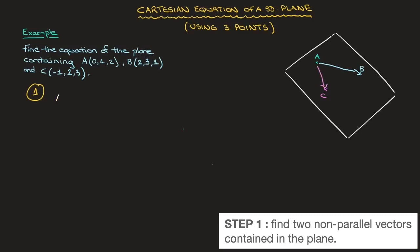Using the coordinates of points A and B, we can define the vector AB, whose components are equal to 2 minus 0, so that's 2; 3 minus 1, which is also 2; and 1 minus 2, so that's negative 1. Next, using the coordinates of points A and C, we define the vector AC, and its components are equal to negative 1 minus 0, so that's negative 1; 2 minus 1, so that's 1; and finally, 3 minus 2, which is 1.